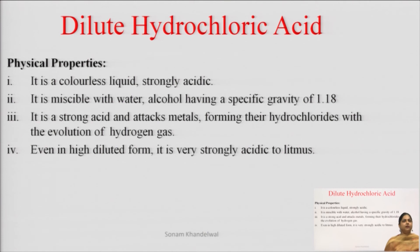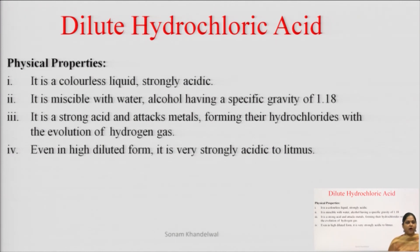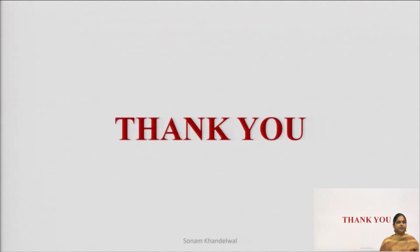Physical properties: colorless liquid hai, strongly acidic hai. Water ke saath mein miscible hai, aur iski jo specific gravity hoti hai woh 1.18 hai. Bahut strong acid hai — metals ko attack karegi. Hydrochlorides banati hai bahut easily. Iske alawa agar hum dilute form mein bhi isko use karenge, tab bhi yeh bahut strongly acidic hoti hai to litmus paper.